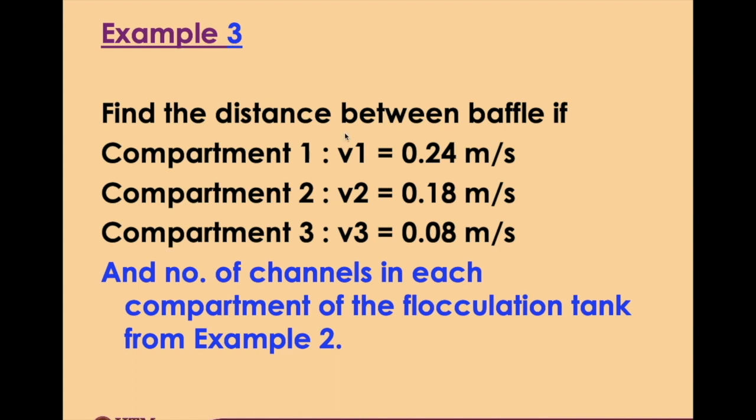Now we have different kinds of speed for compartment one, compartment two, and compartment three. They have different speeds. Because of having different speeds, it will affect the number of channels.